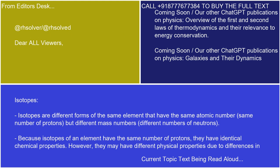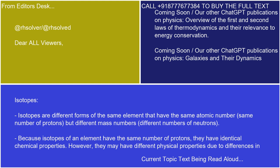Isotopes are different forms of the same element that have the same atomic number — same number of protons — but different mass numbers, meaning different numbers of neutrons. Because isotopes of an element have the same number of protons, they have identical chemical properties. However, they may have different physical properties due to differences in mass.